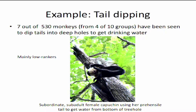One example is tail dipping. Capuchin monkeys routinely drink water out of tree holes — normally they just reach their hand down. But if the hole is really deep, some animals have figured out that their tail is longer than their arm, and they do a little butt waggle to get their tail down to the bottom of the tree hole and then slurp the water off the tail tip. Only 7 out of 530 monkeys in 4 out of 10 groups have been seen to do this. Three groups had just one innovator each with no transmission to any other group members, even though they regularly performed this behavior. The innovators were two subordinate males who had just become adults and one subordinate young adult female. This behavior does not transmit easily.